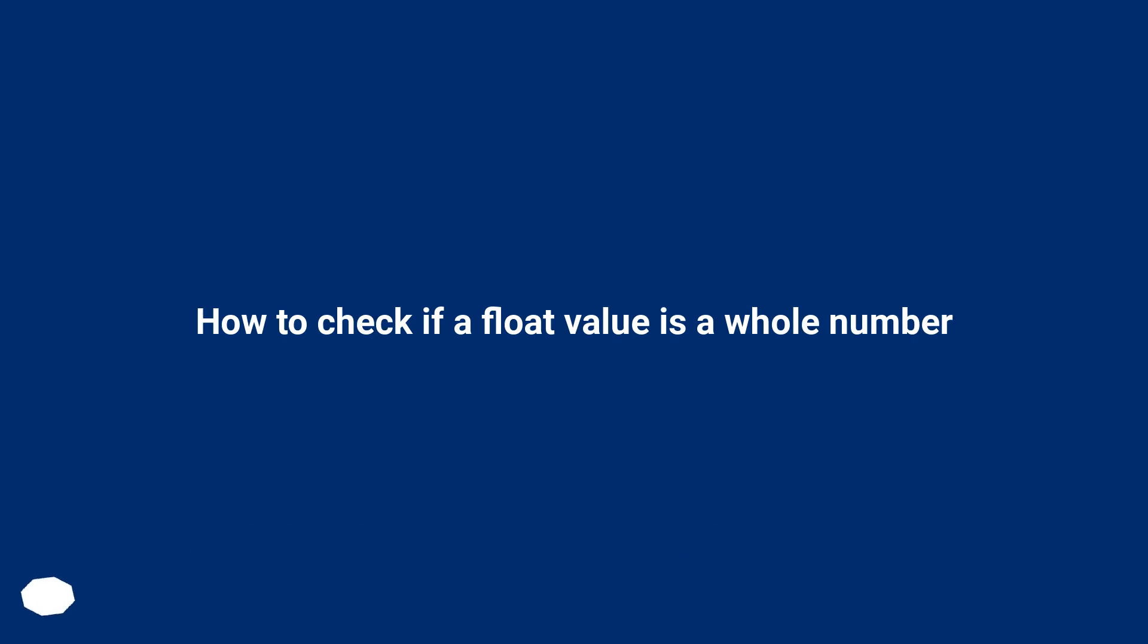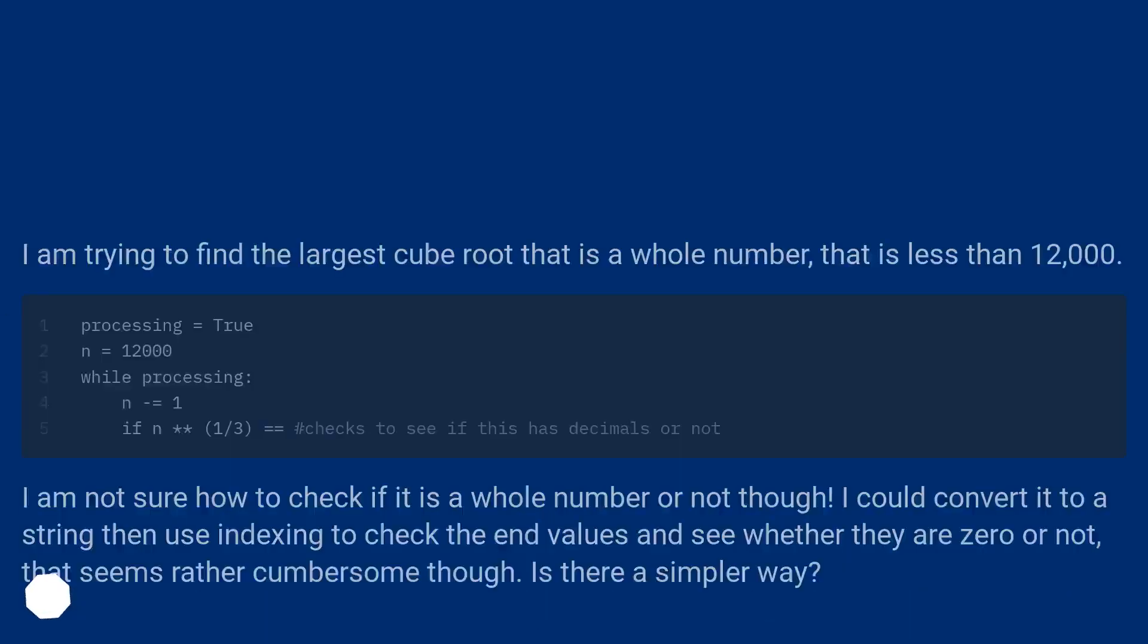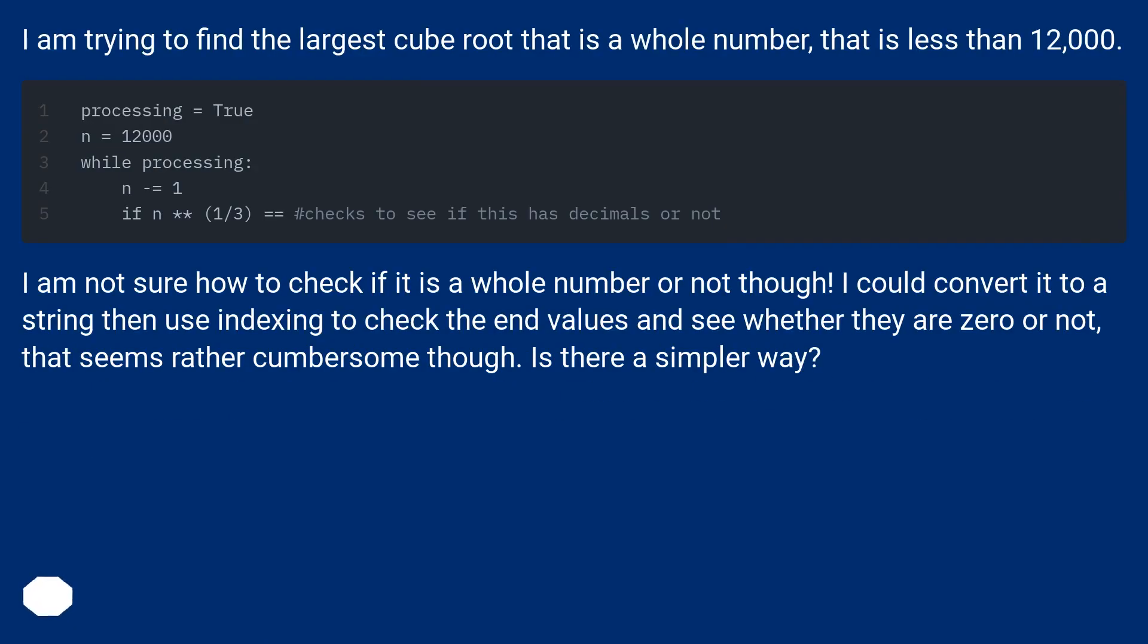How to check if a float value is a whole number. I am trying to find the largest cube root that is a whole number, that is less than 12,000. I am not sure how to check if it is a whole number or not though. I could convert it to a string then use indexing to check the end values and see whether they are zero or not. That seems rather cumbersome though. Is there a simpler way?